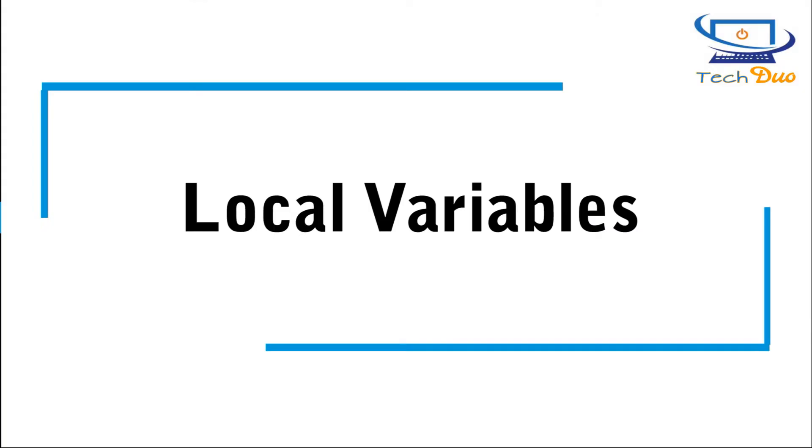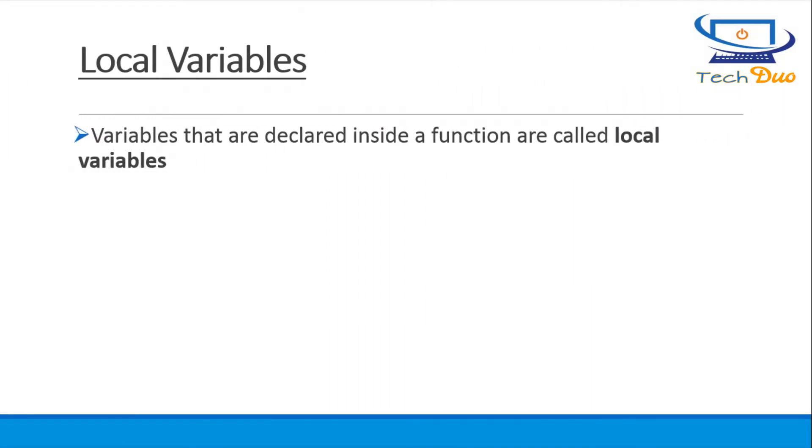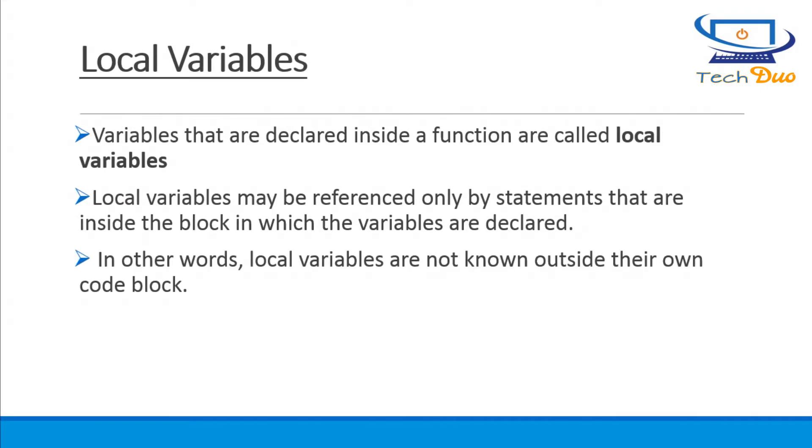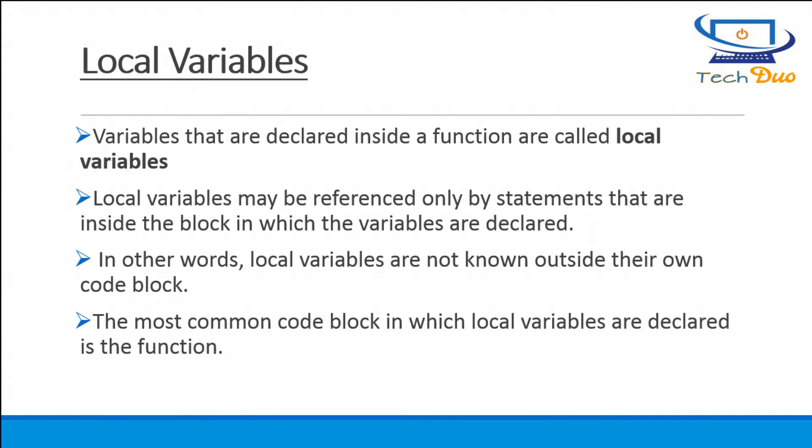Local variables. Variables that are declared inside a function are called local variables. Local variables may be referenced only by statements that are inside the block in which the variables are declared. In other words, local variables are not known outside their own code block. The most common code block in which local variables are declared is the function.